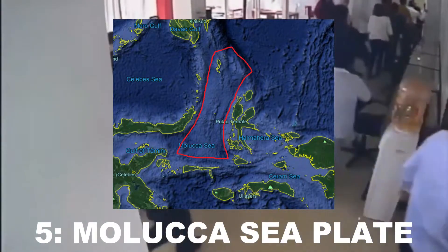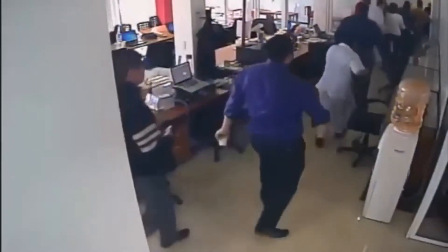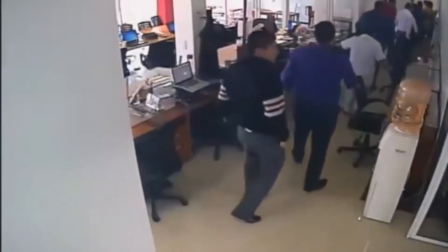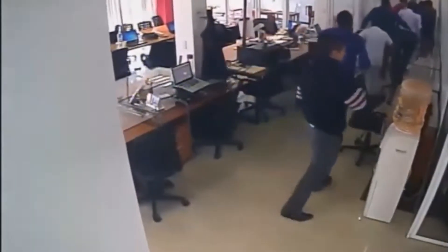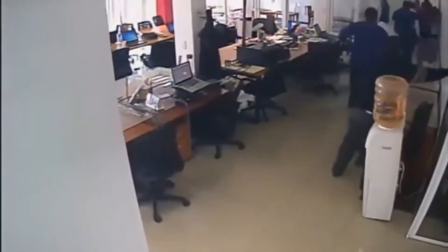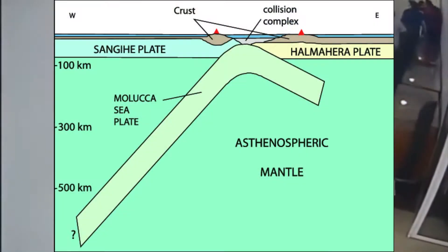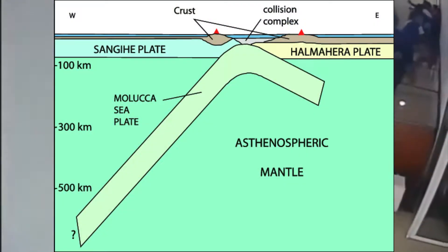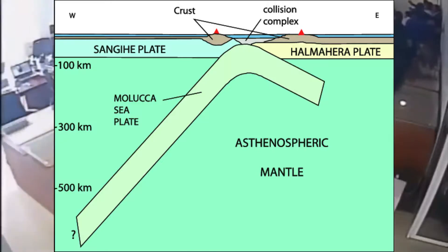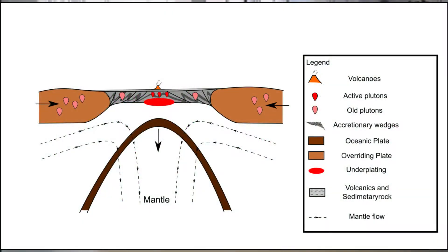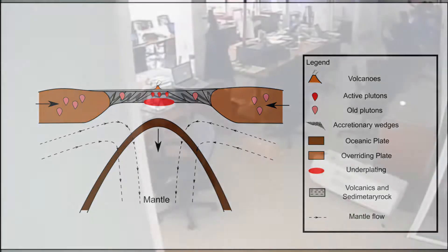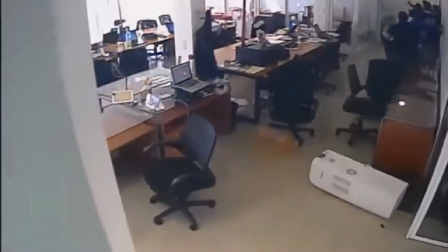Number five: Moluccas Sea Plate. This microplate has the unfortunate circumstance of being subducted on two sides. With no mid-ocean ridge to replenish itself, it will one day completely disappear and sink into the mantle. In fact, most of this plate is already under the mantle.